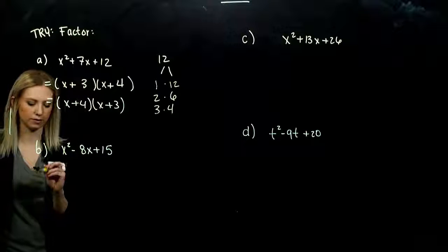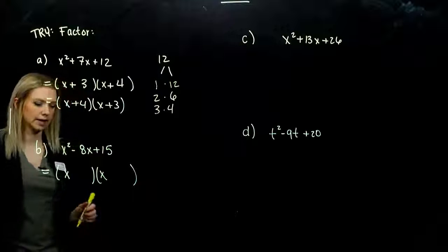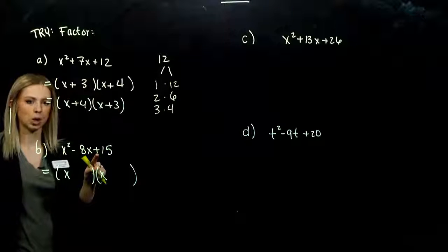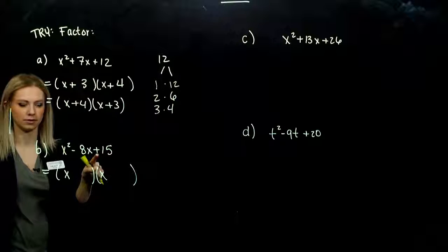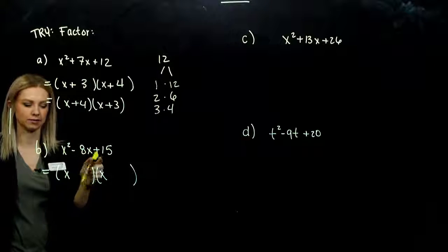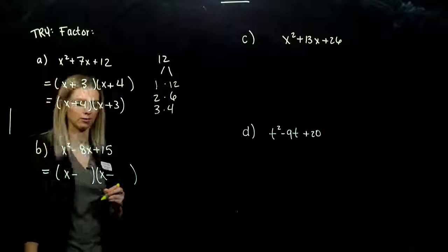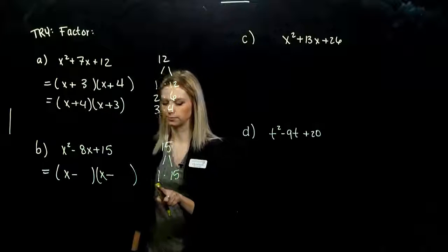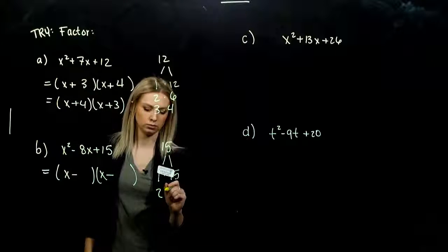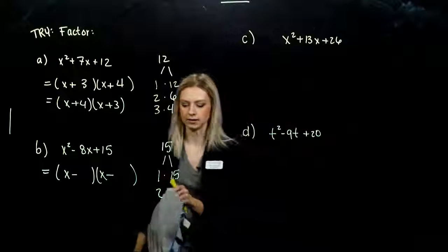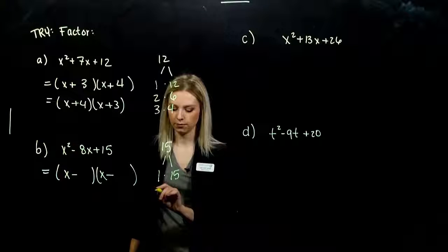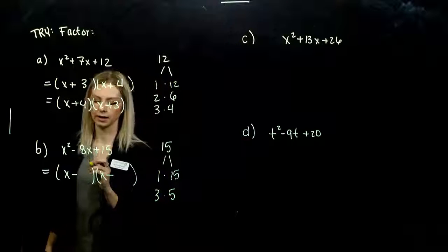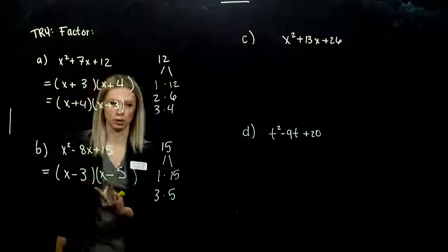Part B. Again, a 1 out on the front, so it's going to be an x and an x. Looking at the signs: when I add I need it to be negative, and when I multiply I need it to be positive. So both signs are going to be negative. Breaking up 15: 1 and 15 — both negative, do we get to negative 8? Too big. Next: 3 and 5. Negative 3 and negative 5 — if we multiply them, we get positive 15; if we add them, we get negative 8. So we fill in those blanks, and the order doesn't matter.